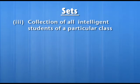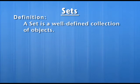Let me collect some intelligent students of a particular class. Is this collection a set? Of course not. Why? Because the collection of intelligent students is not well defined — one child may be intelligent according to one teacher and may not be intelligent according to another. So this collection is not properly defined. We can define a set like this: a set is a well defined collection of objects.